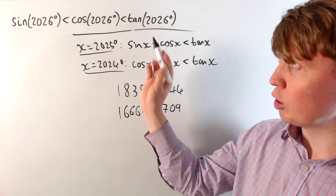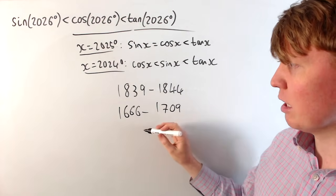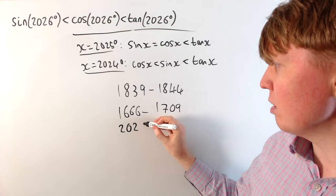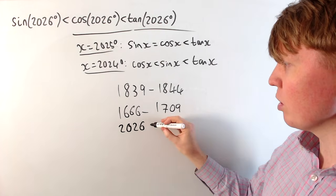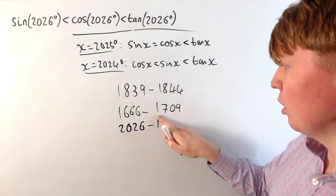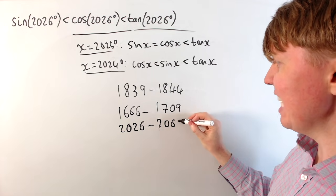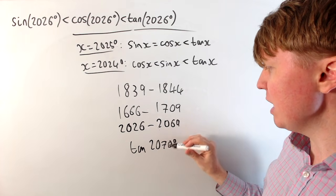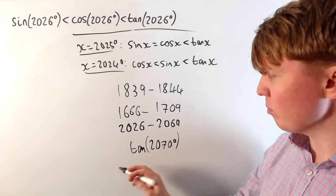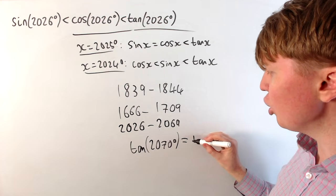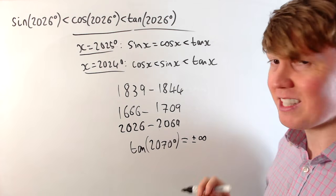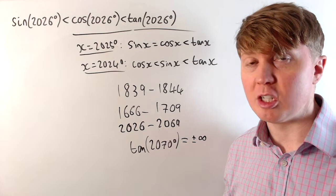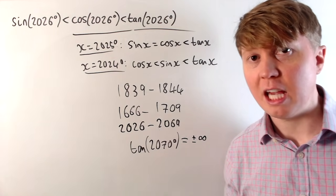Because each of these functions repeat every 360 degrees, we're going to get the same sort of pattern now from 2026, this order's going to be preserved all the way until 2069. And then in 2070, we actually have tan of 2070 degrees isn't well defined, so we get to an asymptote on the graph here. Then after that, in 2071, the order is going to change again.